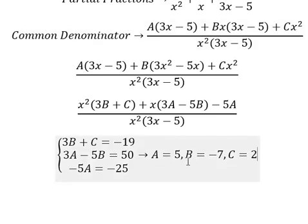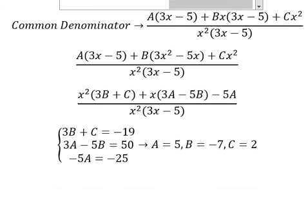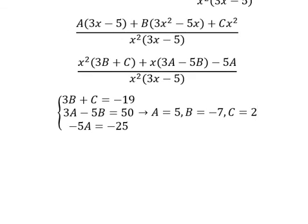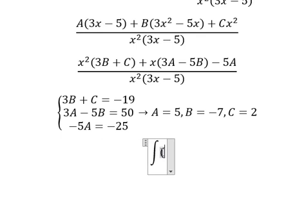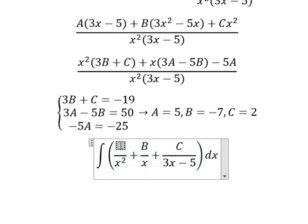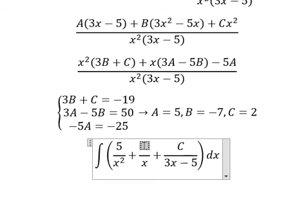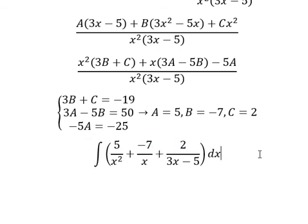After we got everything, we can put A, B, C here. So A equals 5, B equals negative 7, C equals 2, and now we have the final answer.